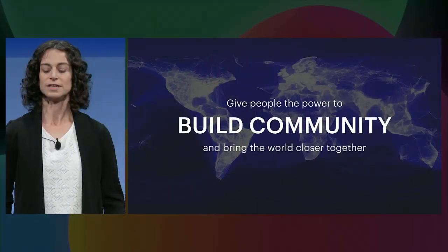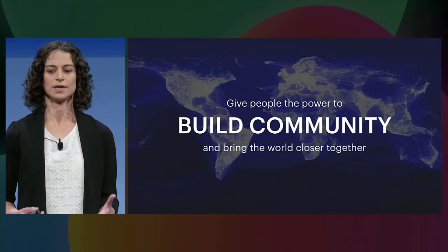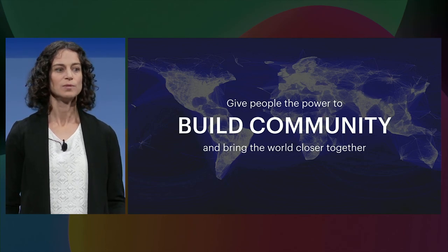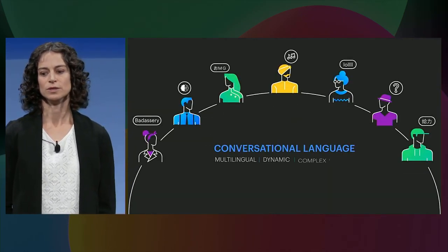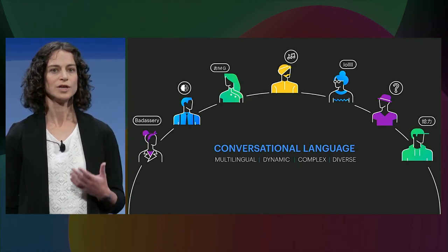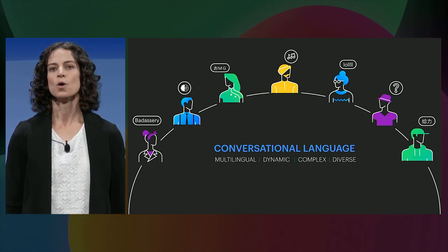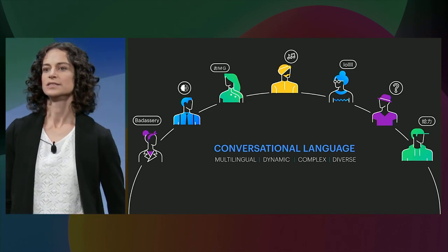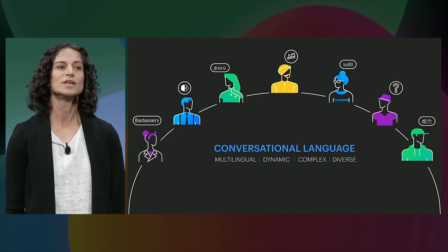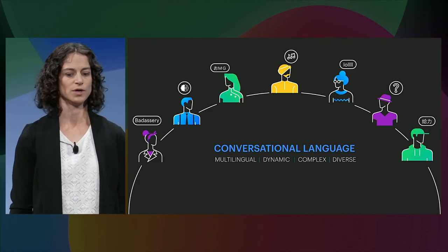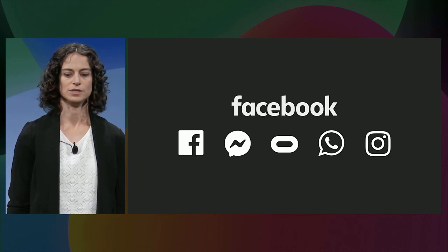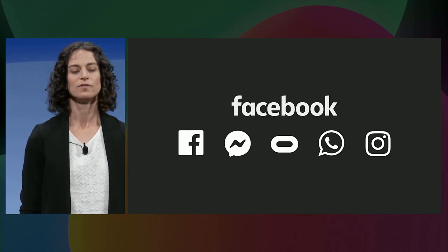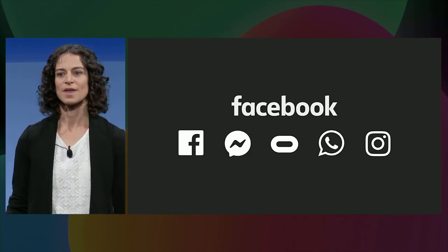To summarize: Facebook is all about conversation. To achieve our mission of giving people the power to build community and bring the world closer together, we need to build AI that understands the type of language people actually use in conversation. As we've seen, language is complex, dynamic, and multilingual — and our challenge is to preserve this diversity while bringing in AI to facilitate the conversation. We've discussed today technologies to make translation and intent understanding more robust to the vibrant nature of conversations, and ways to address the complexity of language by handling complex queries and making use of knowledge. Finally, we need to build all these technologies at scale for all languages to work on the billions of conversations happening on the Facebook family of products every day. Thank you for your attention.